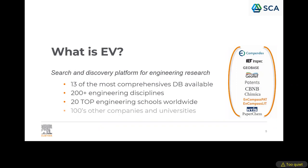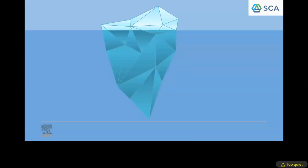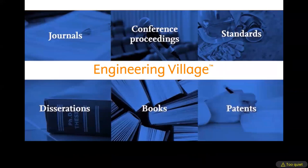We know that 20 of the top engineering schools worldwide use Engineering Village, so you're in good hands. As well as 100 other companies and universities. The idea is to save you time on search, because we all know it takes a long time to search for the data you actually need. Here at Elsevier we just want to save you this precious time so you can use it for your actual research or work.